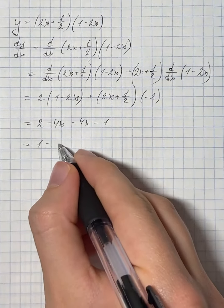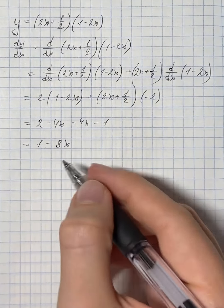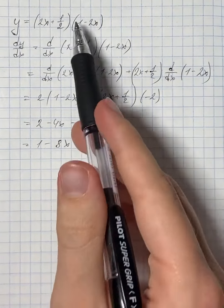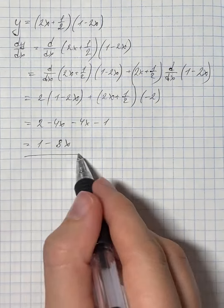So that's going to be 1 minus 8x. Therefore, the derivative of our function is 1 minus 8x.